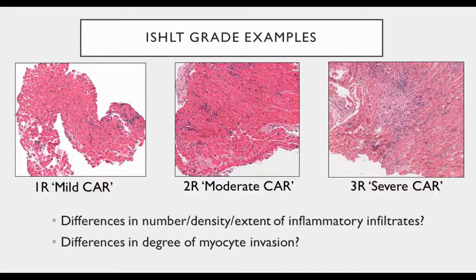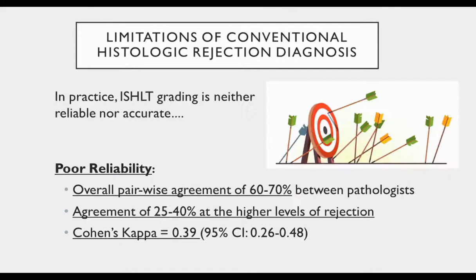As a result, it's not surprising that when we look at the real-world performance of conventional ISHLT grading, the field's diagnostic standard is far from a gold standard. In practice, ISHLT grading is neither reliable nor particularly accurate. The poor reliability in terms of inter-rater agreement has been investigated for decades and consistently found to be lacking. Overall pairwise agreement in the 60s is pretty common, with dismal agreement on the high grades of rejection, which are the ones that tend to result in major treatment changes.